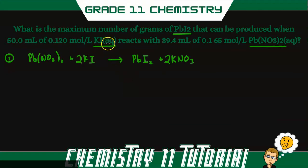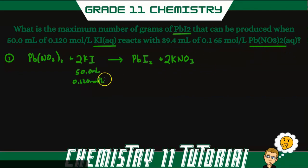Now let's look at the given information. We have 50 milliliters of potassium iodide at a concentration of 0.120 moles per liter. We also have 39.4 milliliters of lead nitrate at a concentration of 0.165 moles per liter.